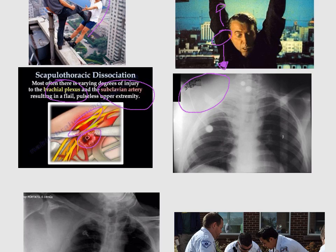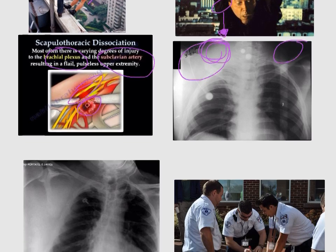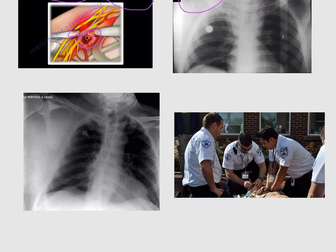What do we see in the chest X-ray of scapulothoracic dissociation? The ruptured structure will lead to leakage of blood, and the blood will form a hematoma. Normally, the scapula is protected anteriorly by the chest, so it is posterior to the chest.